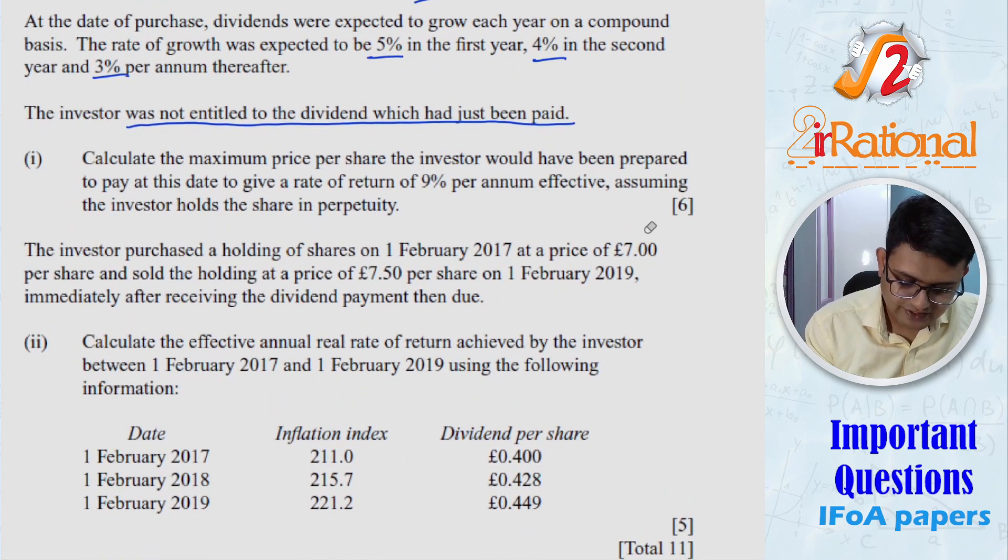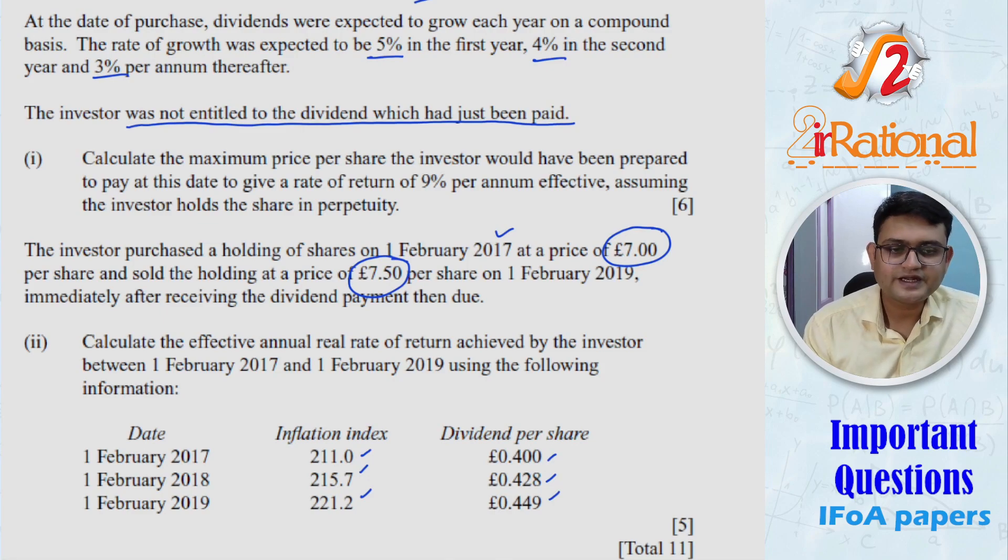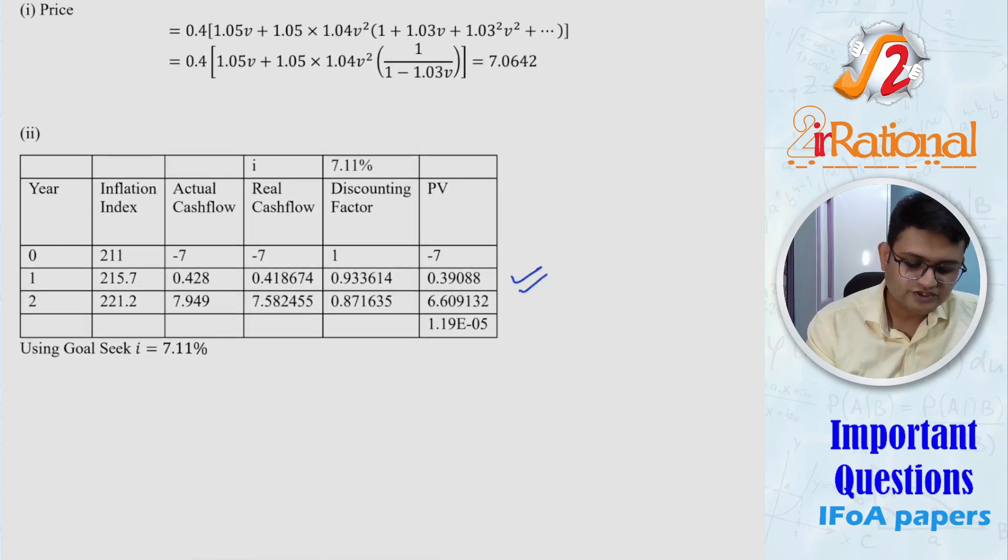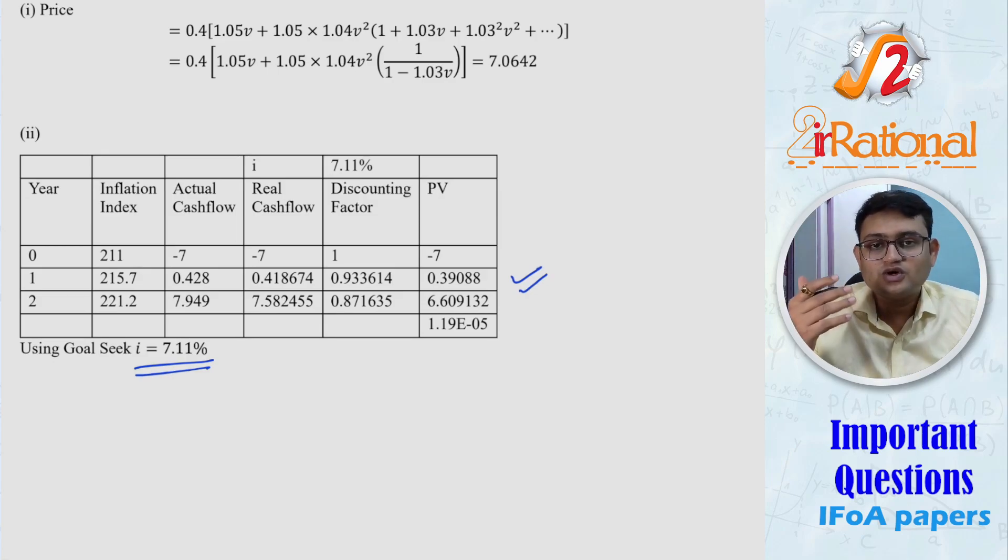In the later on part, they have specifically said that on 1st February 2017, a purchaser bought the share at the price of 7 per share and then two years later sold it at 7.5 per share. They have given us the inflation index and the dividends that were released at that time. We have to calculate the annual real rate of return. Any question that might require a table type of solution, you can use Excel to solve them. So I have solved this in Excel and then pasted here. You can copy and then paste the whole table. Just make sure you're not pasting with links. These were just values. There were no links that were pasted. And to calculate the rate of interest, I used Goalseek. You can use Goalseek to solve your question in Excel and then copy paste it here.